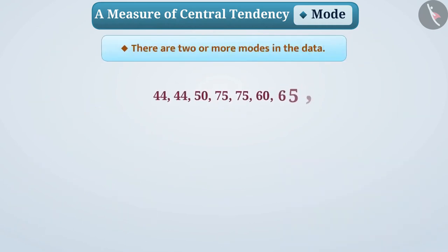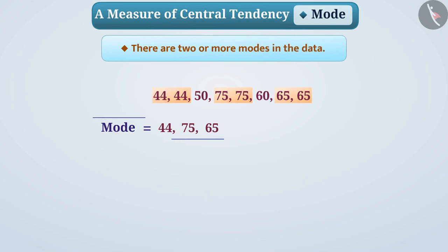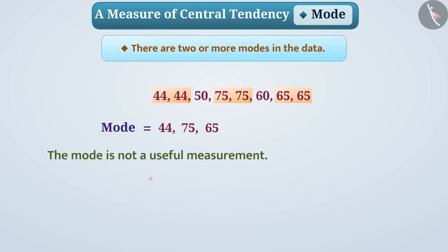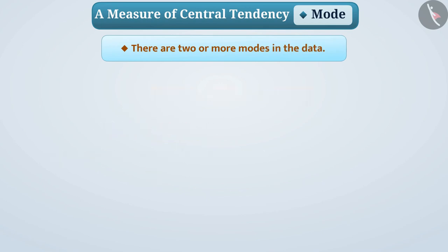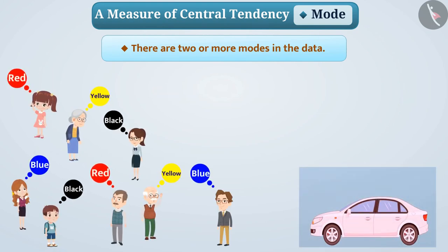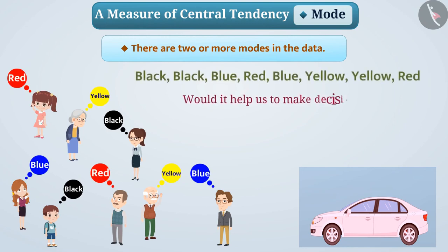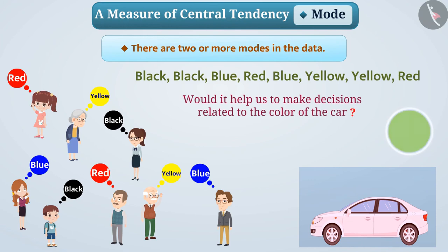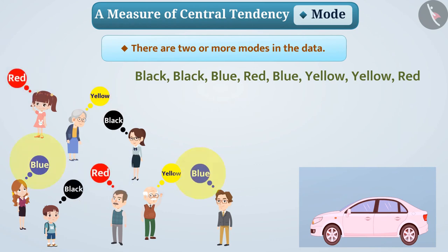There are some collections of data in which all observations are repeated the same number of times, or there are 2 or more modes. In such situations, the mode is not a useful measurement. For example, if the car colors were selected by family members such that each color is repeated twice, choosing one color will not be easy.